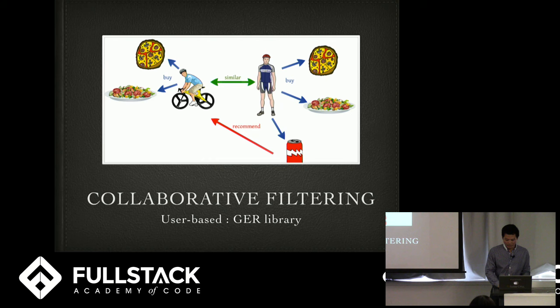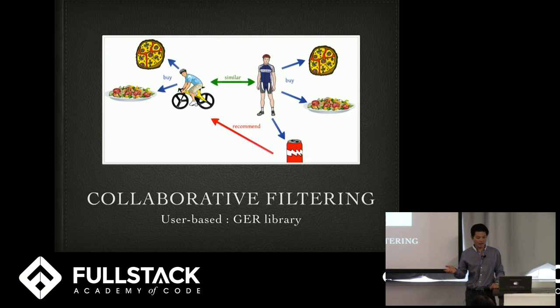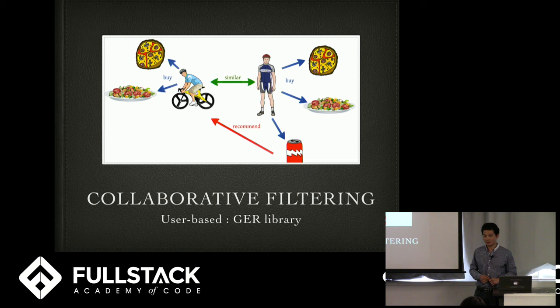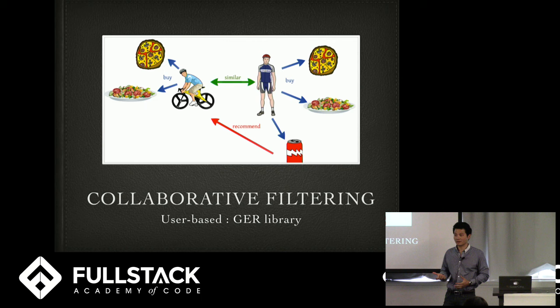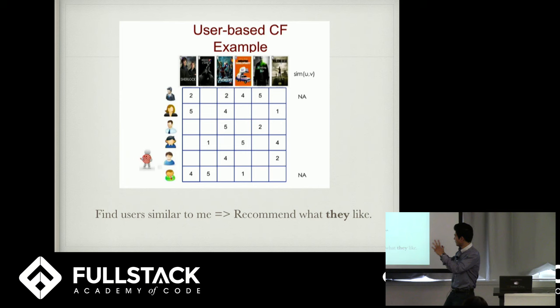How do you build a rec engine? The first approach is user-based. Let's say Justin loves to order pizza and salad over lunch on Seamless, and Jason loves to order pizza and salad for lunch as well, and he also orders a vanilla Coke every single time. Chances are Justin might also like the same thing, so why not recommend it to him? The algorithm is based on cosine similarity — if you and Jason and Justin have similar tastes, you can recommend those items to each other.